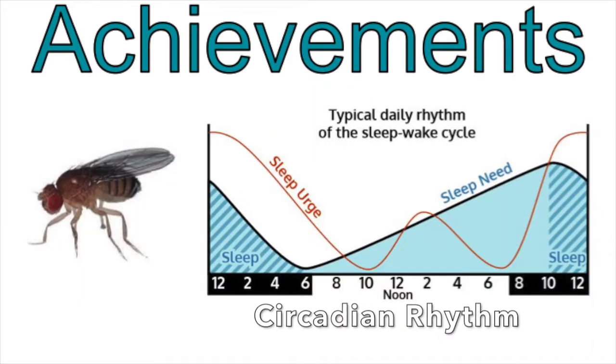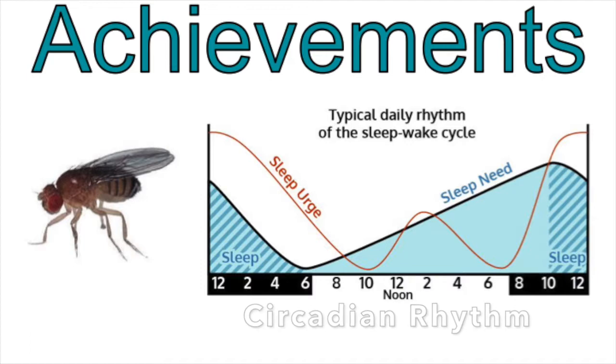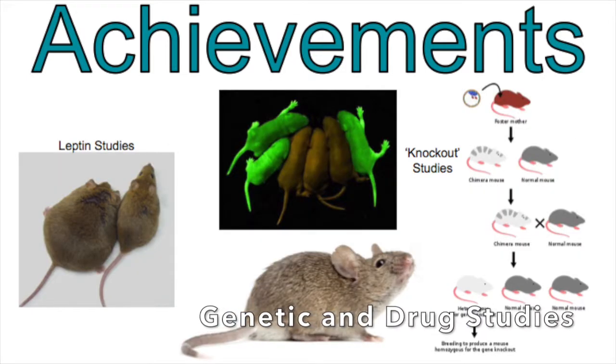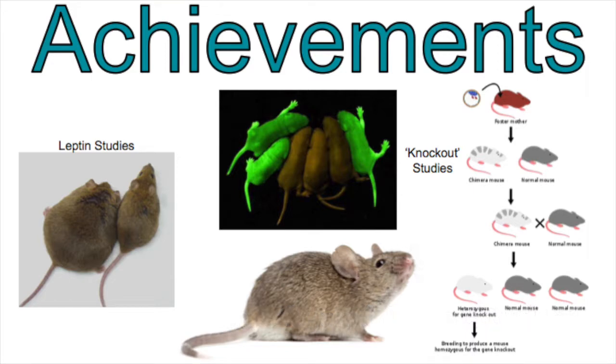D. melanogaster helped define the rules of our circadian rhythms, and M. musculus continue to produce data about genetic diseases and modification, and the effects and interactions of many medications.